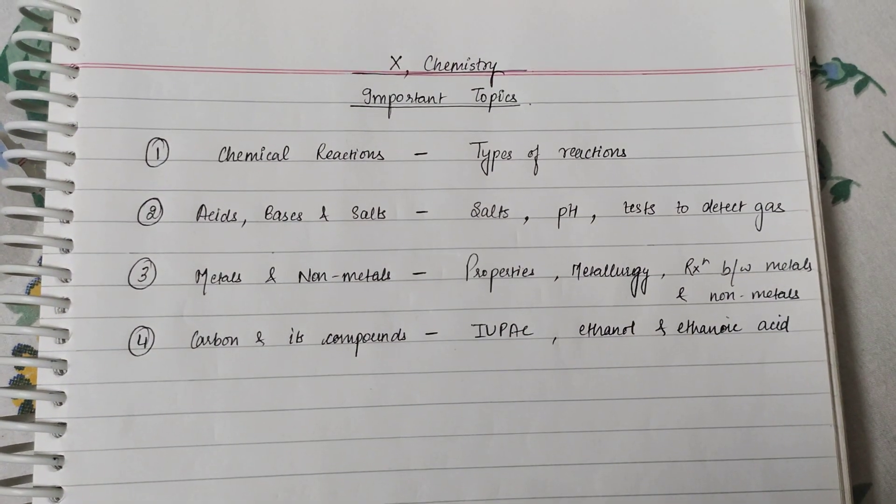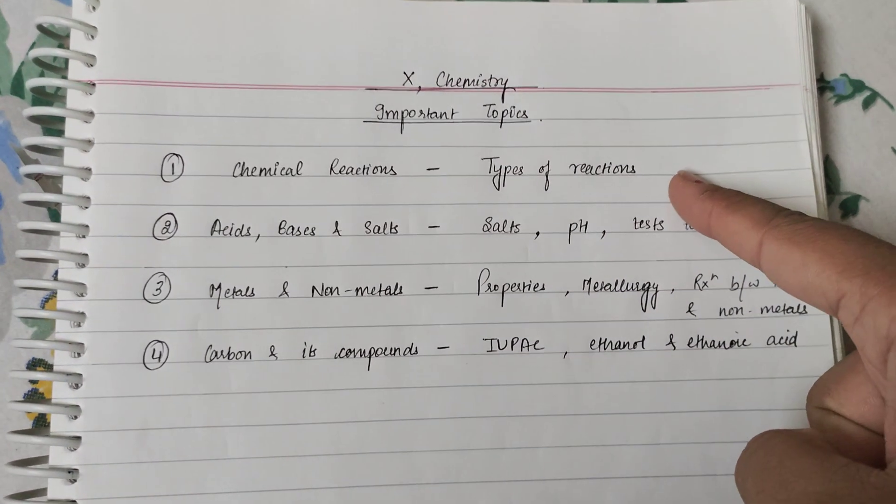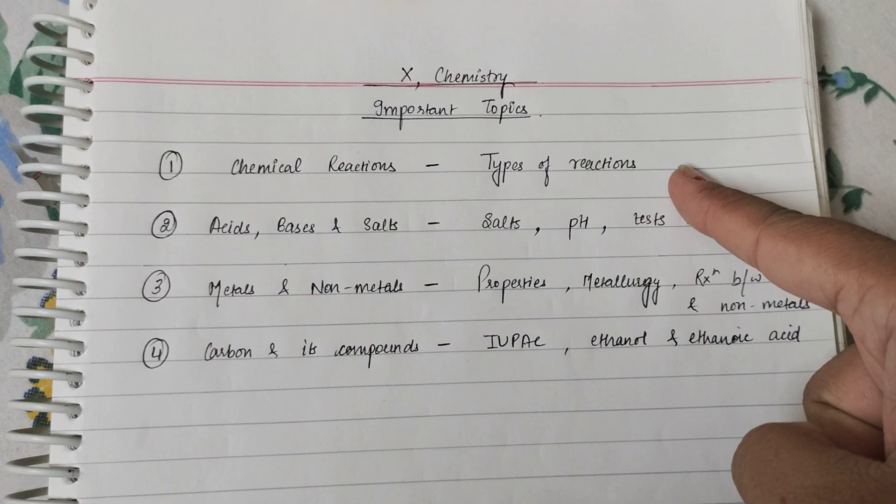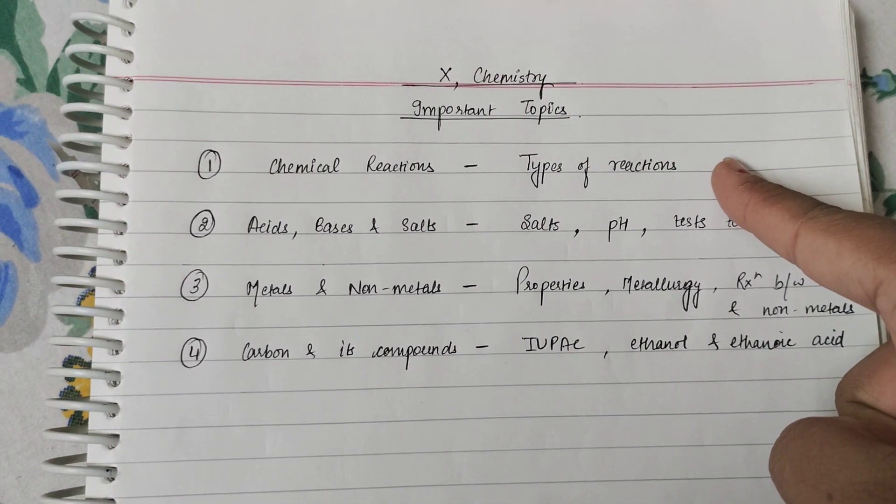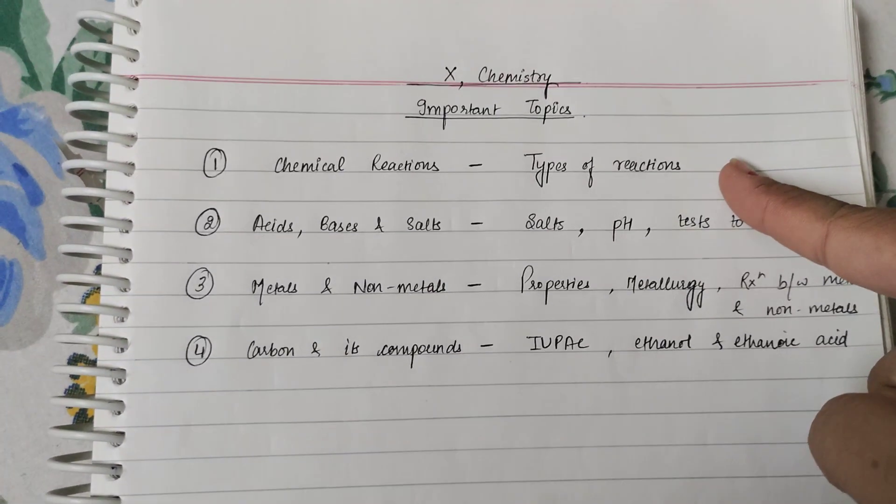So my first lesson is chemical reactions. In chemical reactions, you have to do types of reactions very well. So types of reactions, specifically sunlight reactions, AgCl, AgBr, they are asked. So now we will do it well.